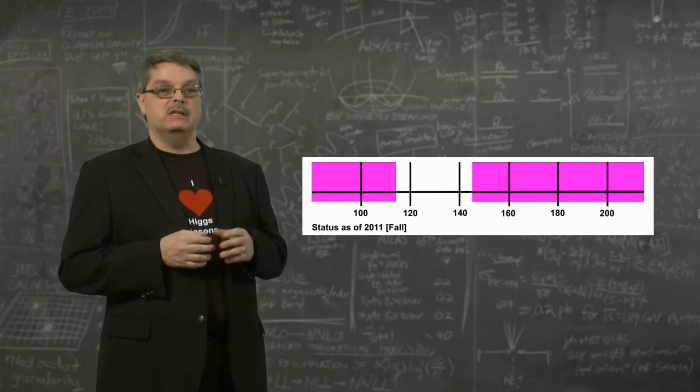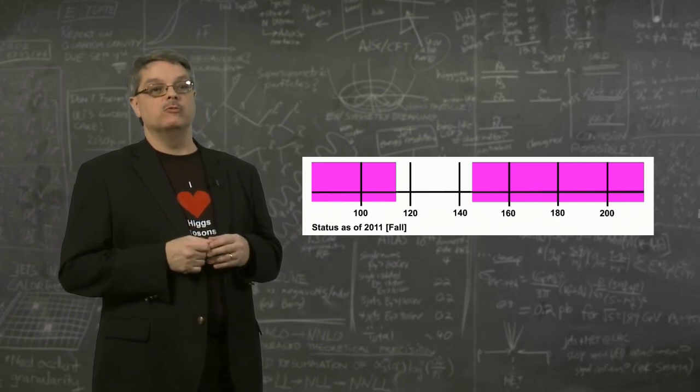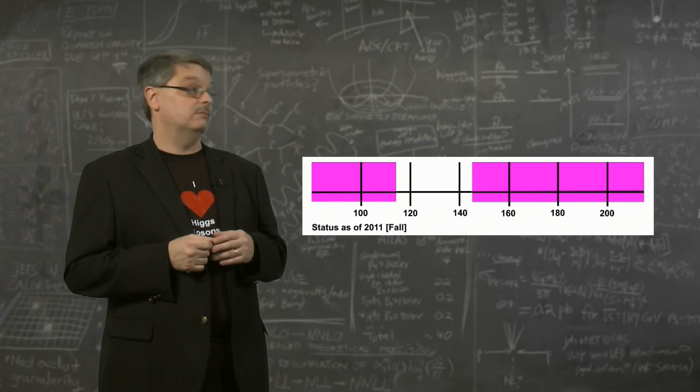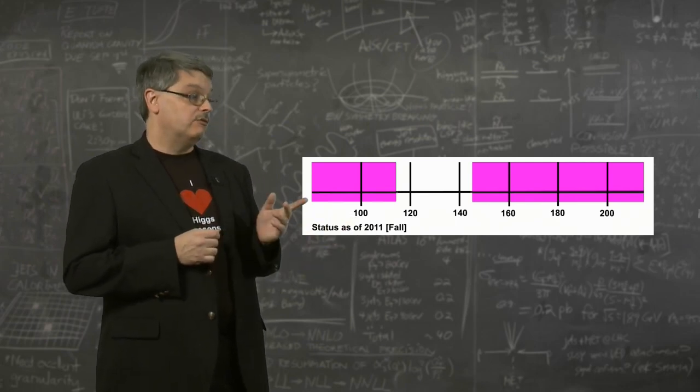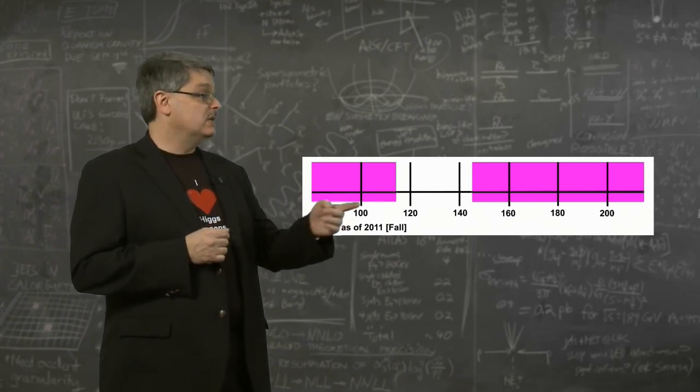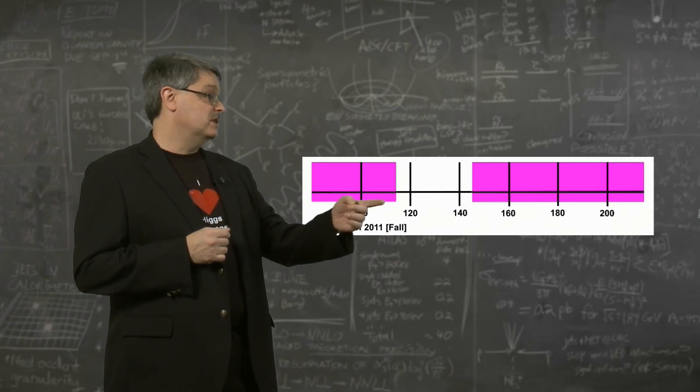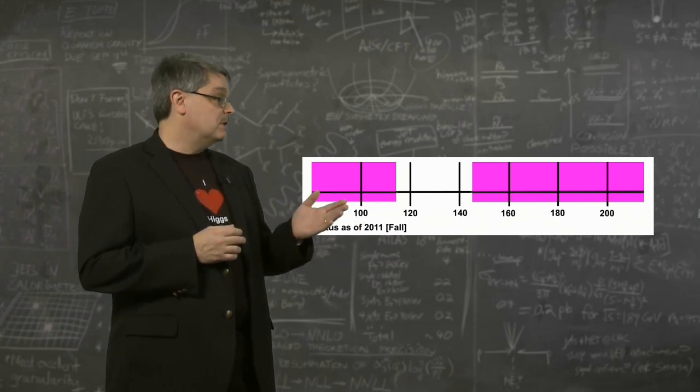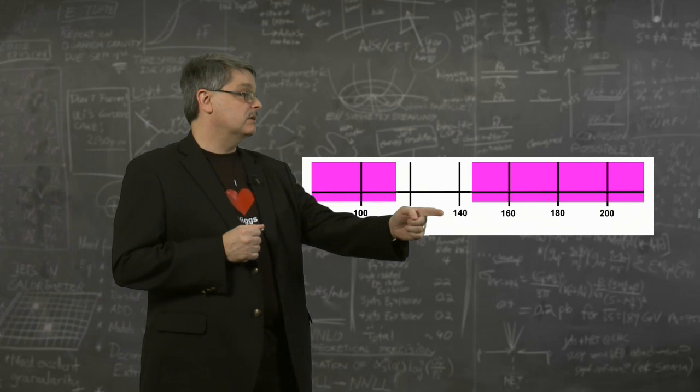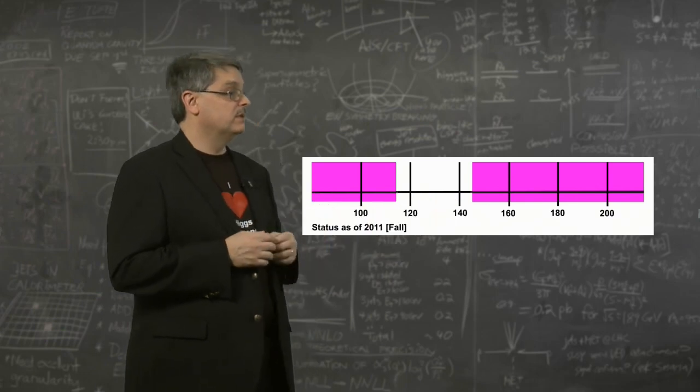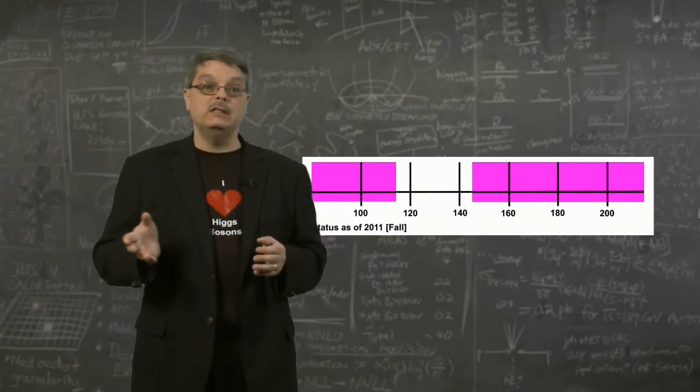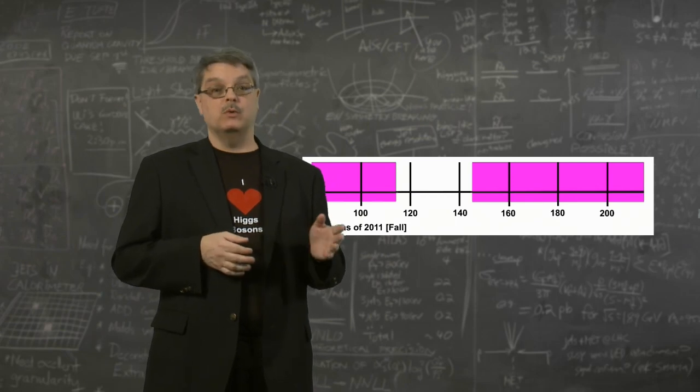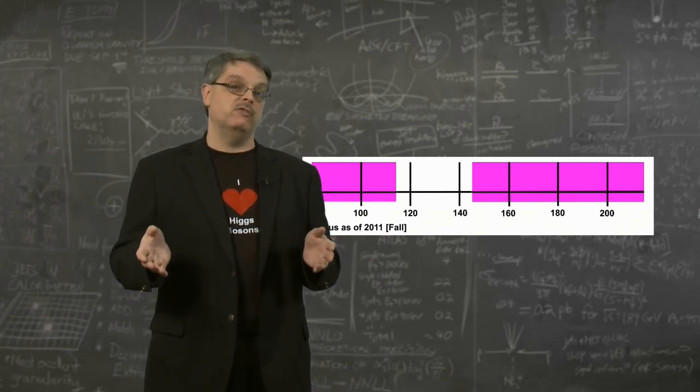Using the methods that I've described here, previous studies have ruled out some possible values of the Higgs boson mass, as shown by the pink regions. For instance, we know the Higgs boson can't have a mass below about 115. These experiments have also excluded masses above about 145. This means the most likely range for the Higgs boson is somewhere between 115 and 145.